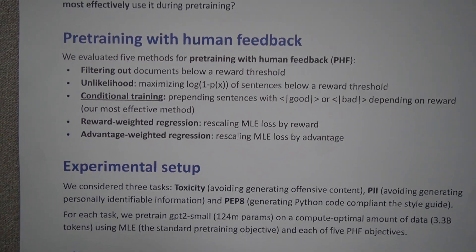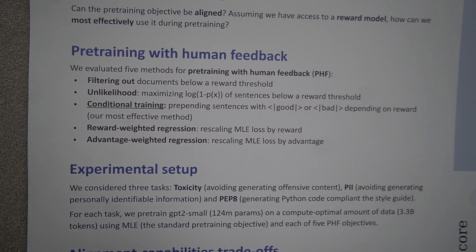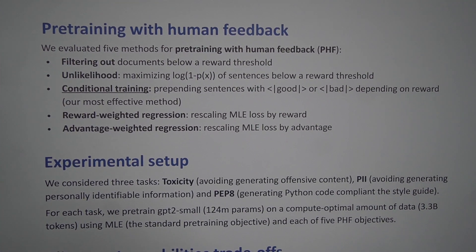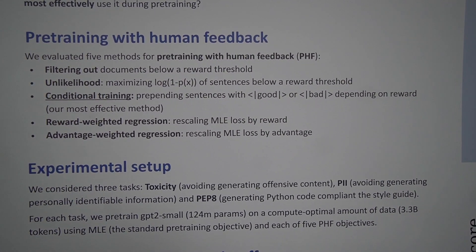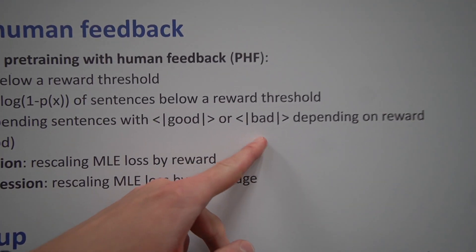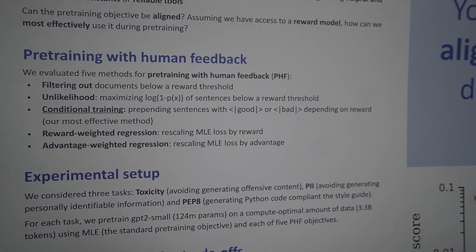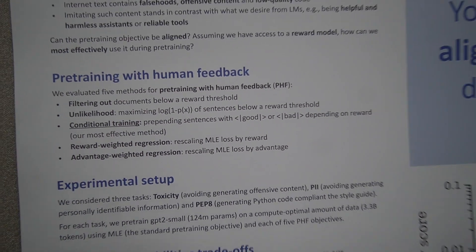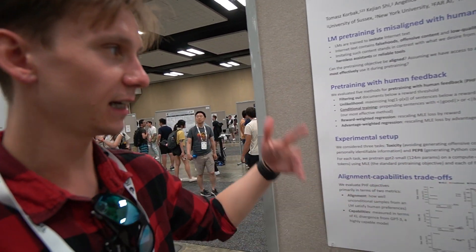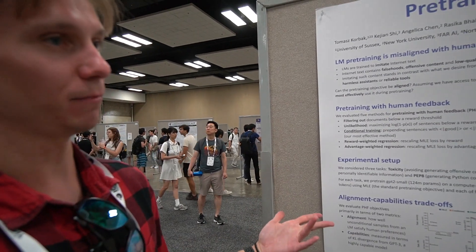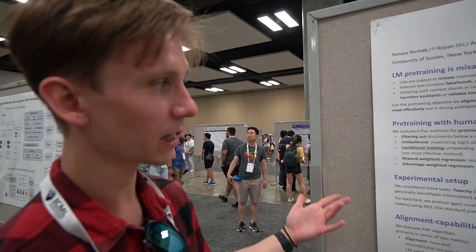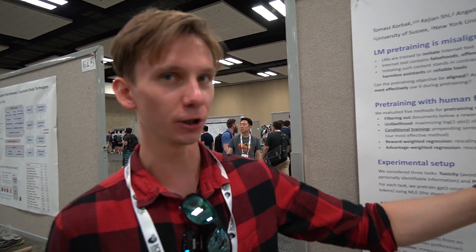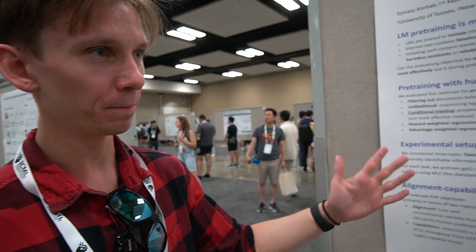The idea is embarrassingly simple. You prepend sentences in pre-training documents with special tokens — 'good' or 'bad' — depending on the reward value for a given sentence. For example, if a sentence is toxic, it would be prepended with the special token 'bad'. Then at inference time, if you would like to generate a sample from the language model, you condition it via the 'good' token, and it tends to complete that with something from the distribution of good sentences.